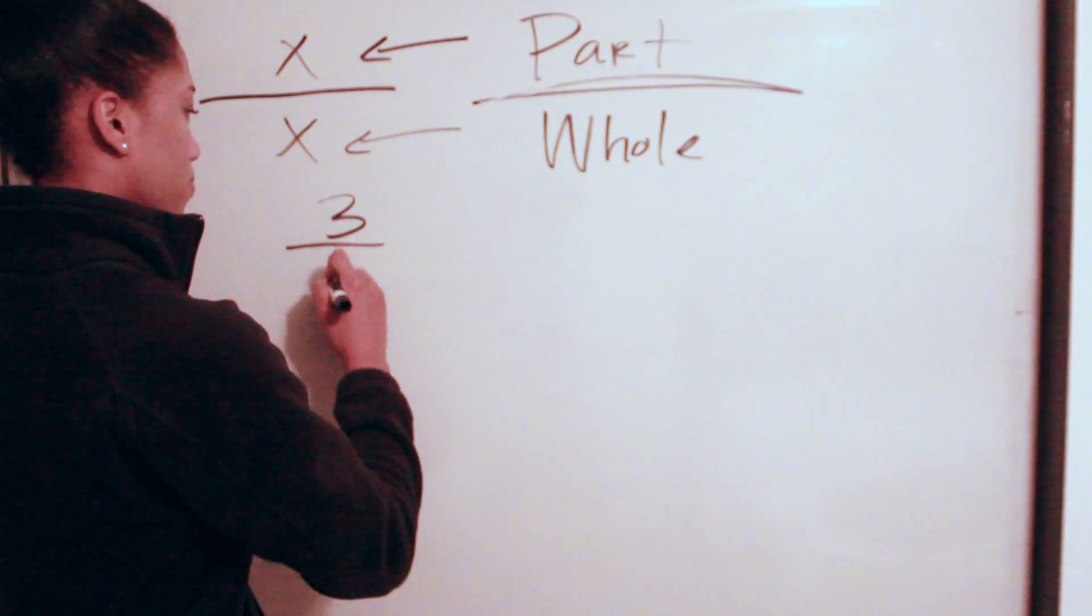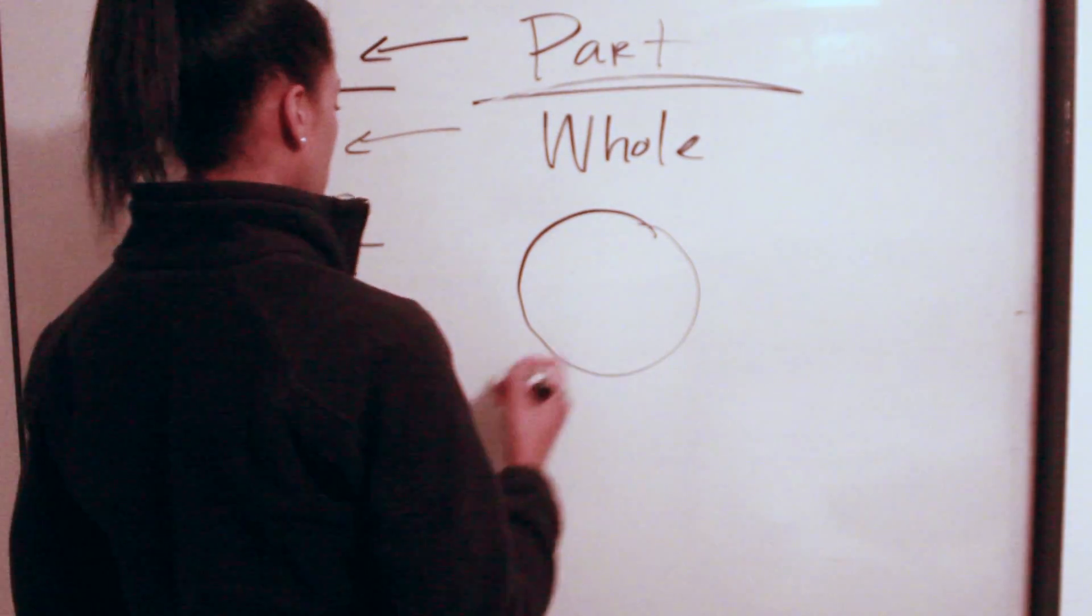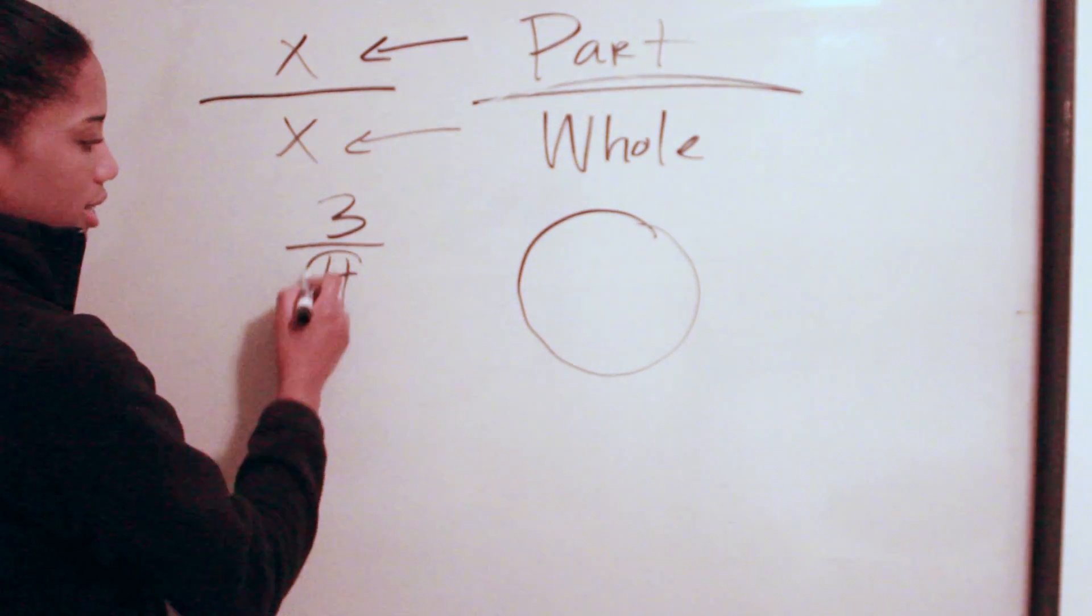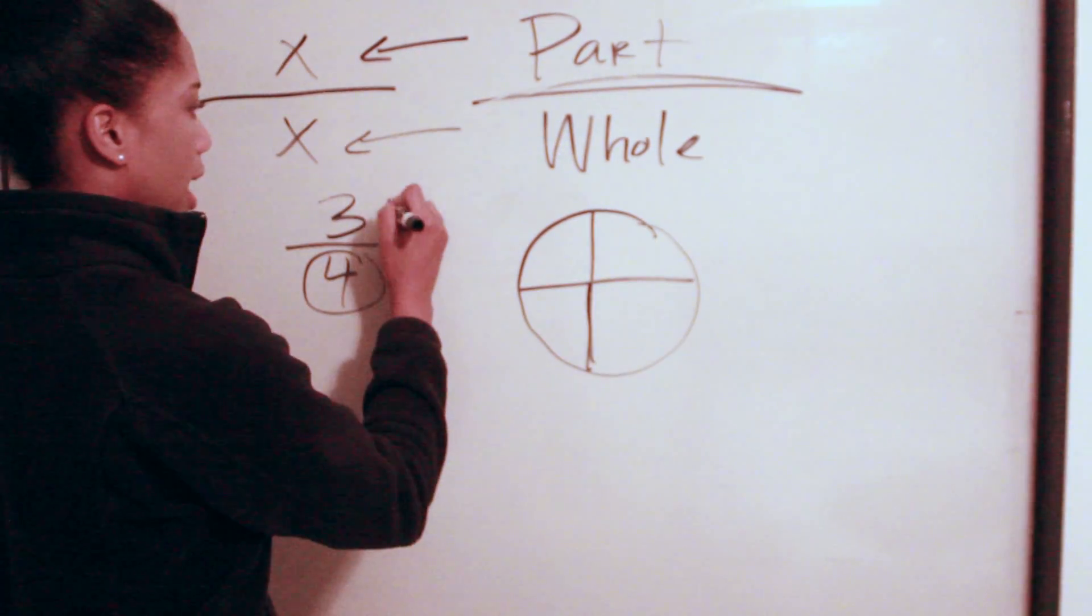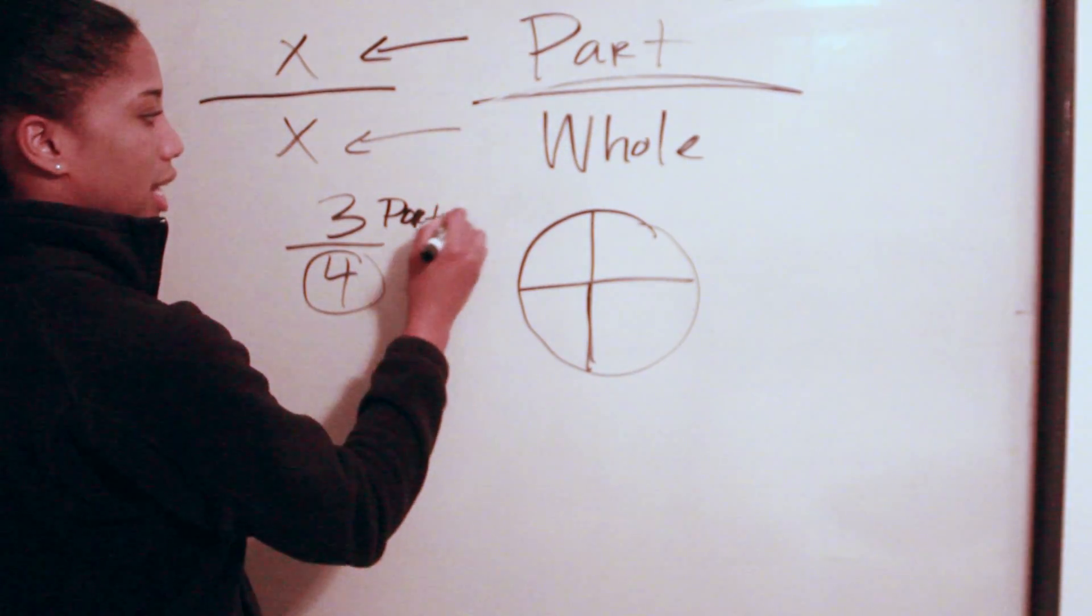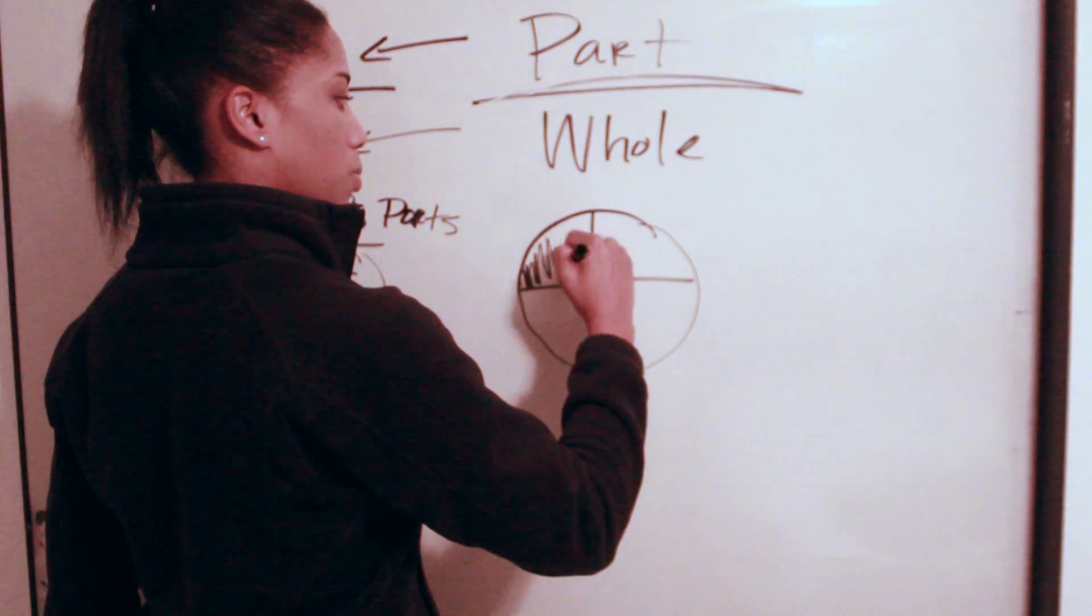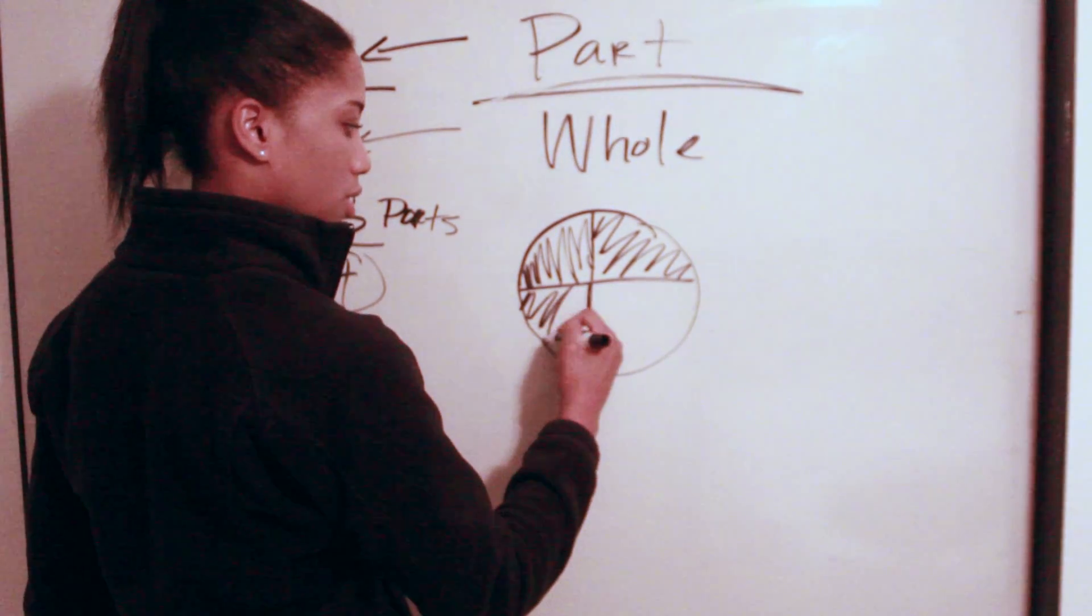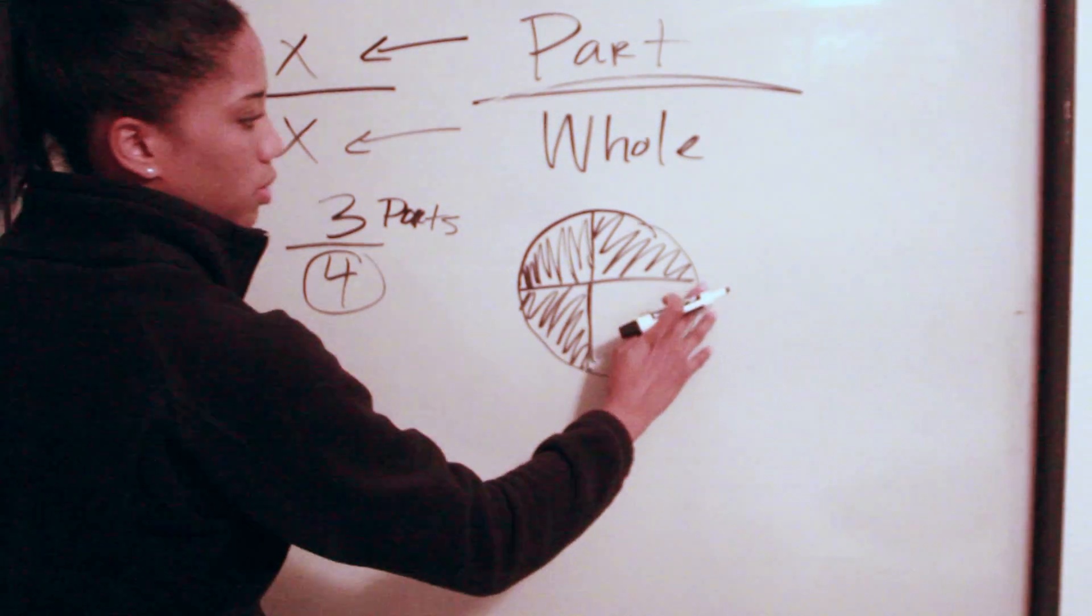Let's say you have three fourths of an amoxicillin pill. So of course, this is the whole pill and it's divided into four different segments. So this whole pill is divided like that, and three parts is what we need. So three parts of this amoxicillin pill would be shaded - this is how much of the pill.